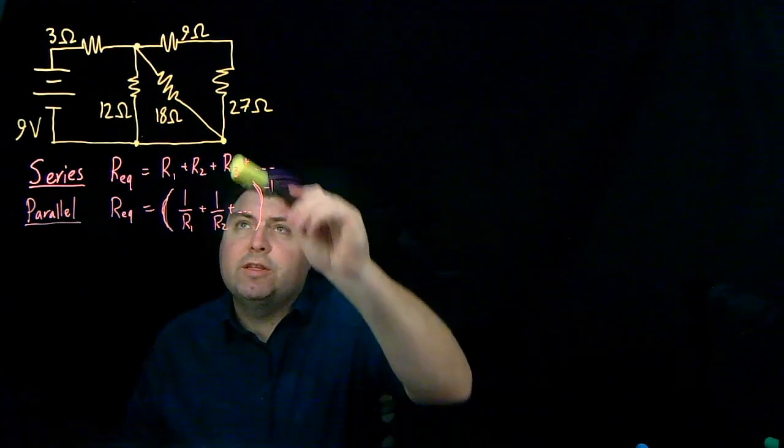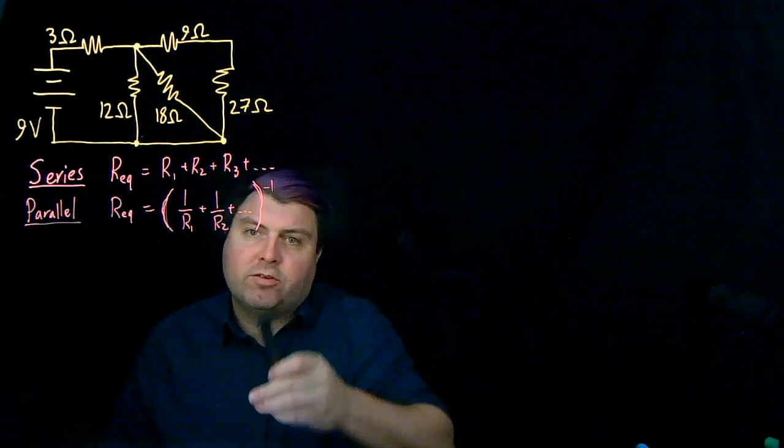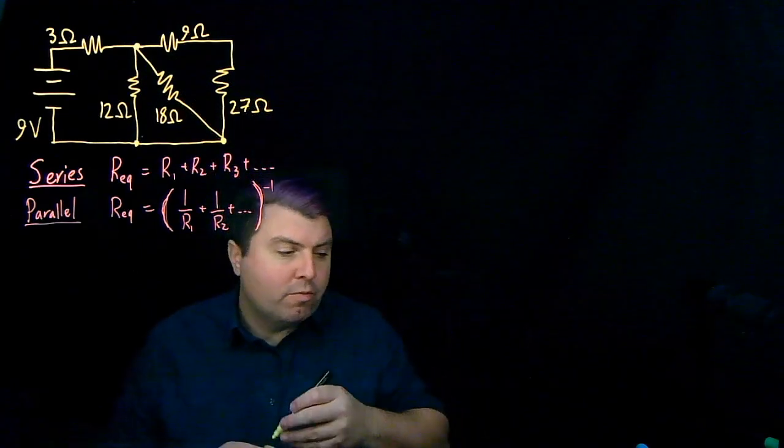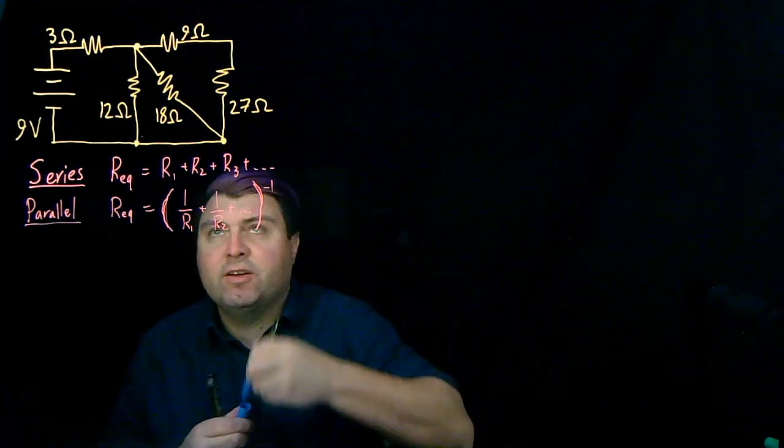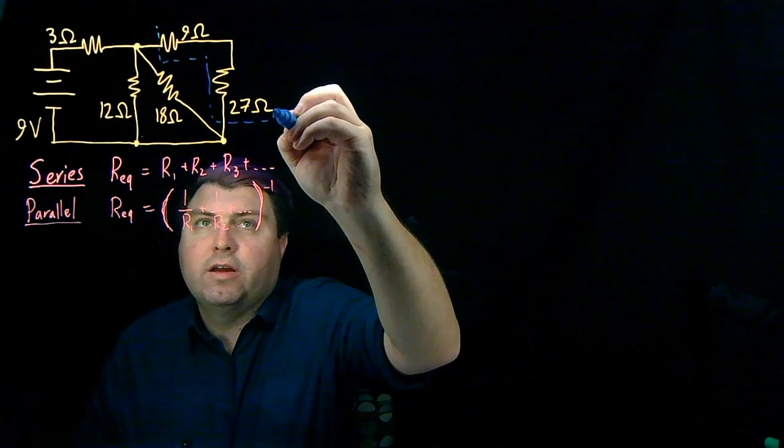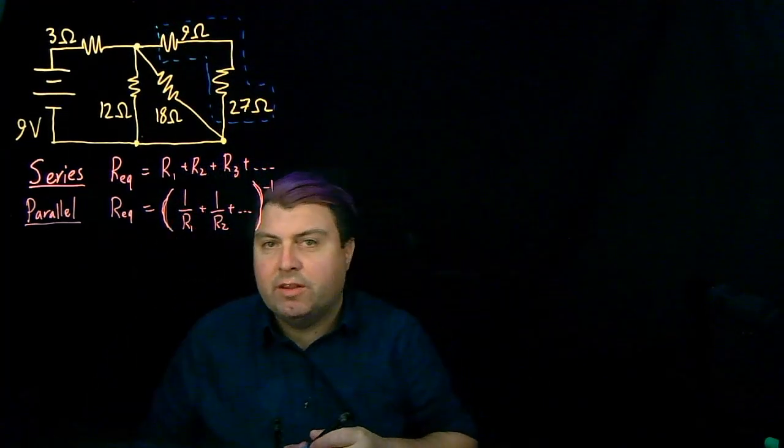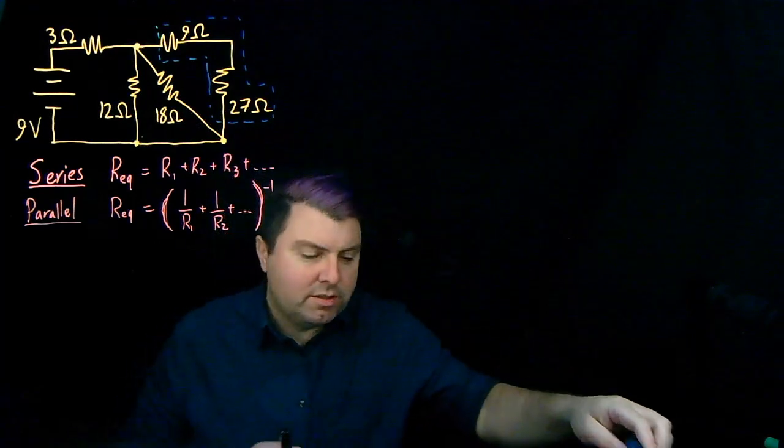Now with this 9 and this 27, if I travel over the 9, I have to travel over the 27. So we can say that the 9 and 27 are in series. And there's nothing else that they're in series or parallel with. So we should do this series rule first.